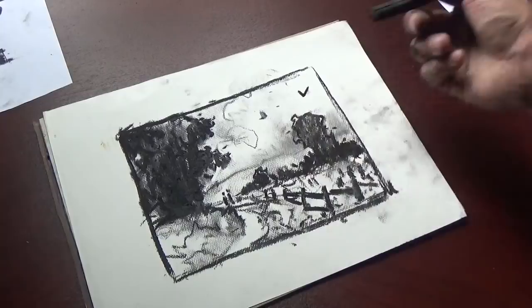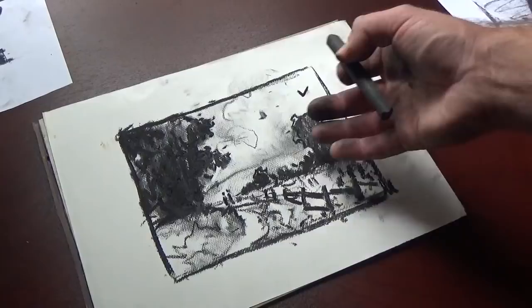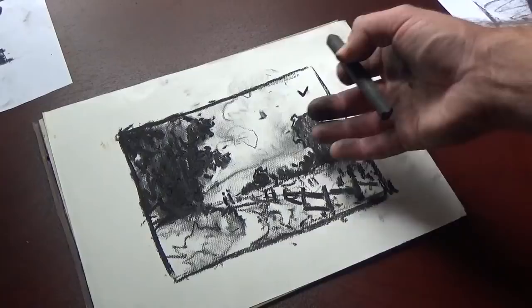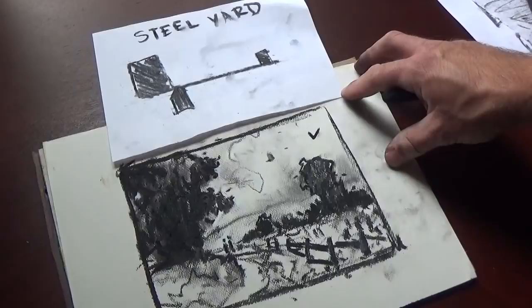For example, this tree in reality might have been way over here and I might have had to pull it over into my painting to create that balance. But that's okay because that's what we talk about when we talk about designing a picture. We're designing nature and we're using the elements of nature in a landscape to compose a picture.